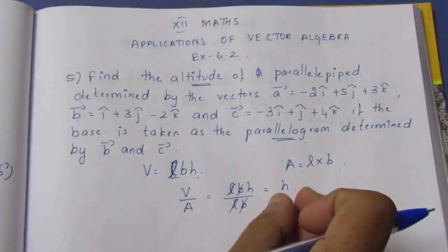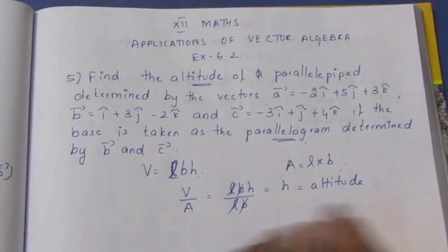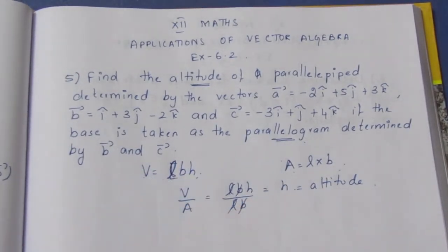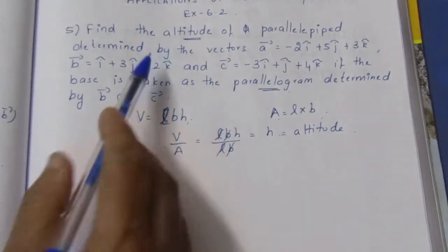We'll find the volume, then the area of the parallelogram base, and divide. Height h equals volume divided by area.